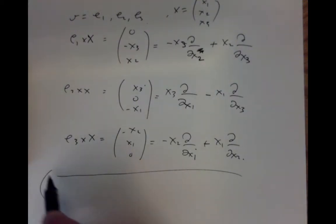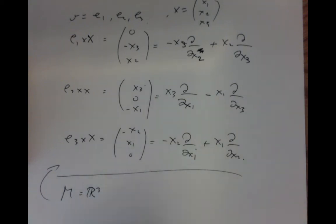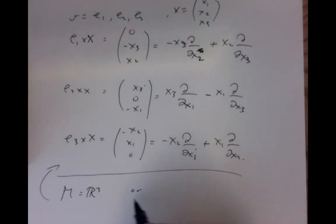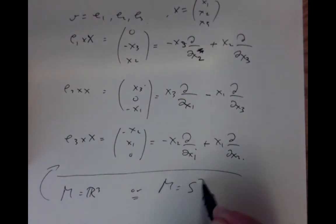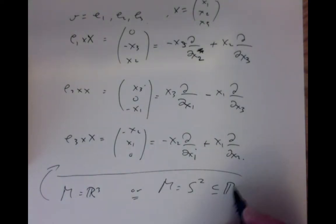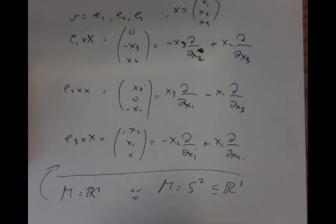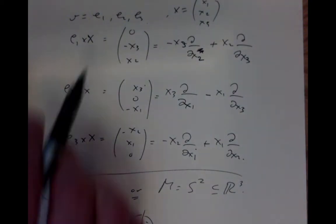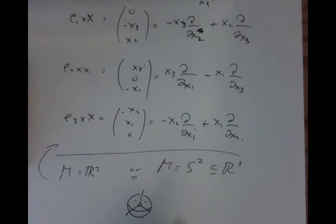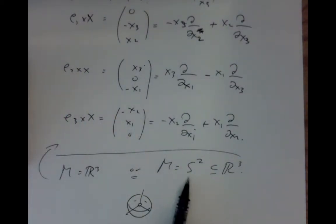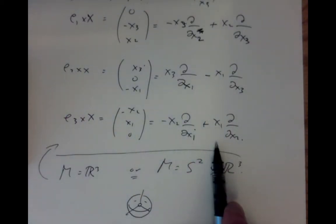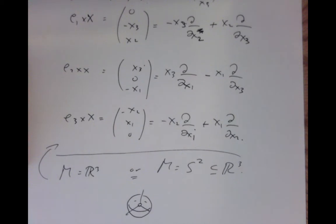We might think of the manifold as three-dimensional space, but we could also take it to be the two-dimensional unit sphere, since rotations around the origin always preserve it. This gives us a collection of three vector fields on the sphere, which makes the example a little more interesting.